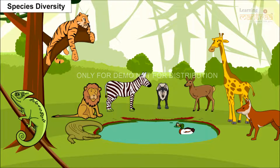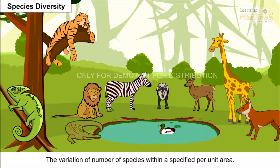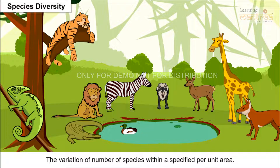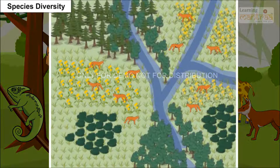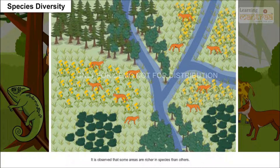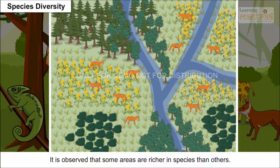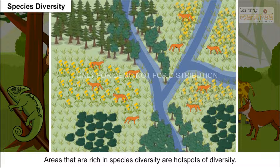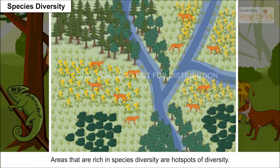Species diversity. The variation of the number of species within a specified per unit area is species diversity. It can be measured by its richness, abundance, and types. It is observed that some areas are richer in species than others. Areas that are rich in species diversity are hotspots of diversity.